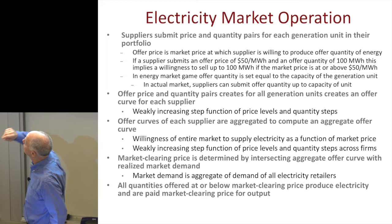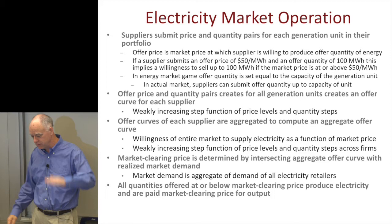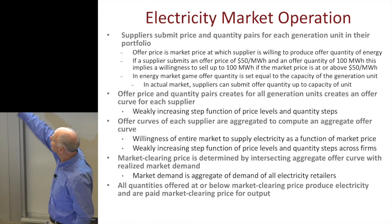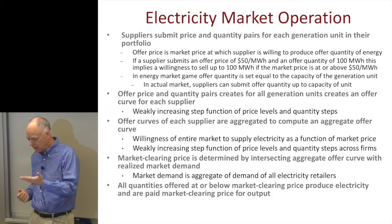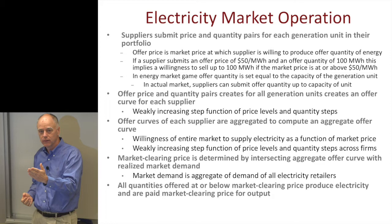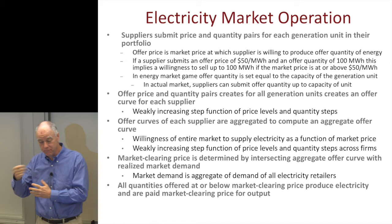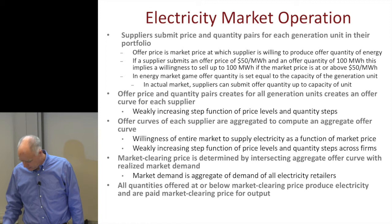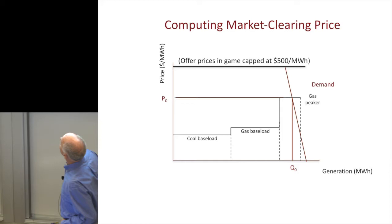Once you have the aggregate supply curve, the market clearing price is set where that supply curve crosses aggregate demand — just as you'd think of it from economics. If your offer price is at or below the market clearing price, you're dispatched. If it's above the market clearing price, you're not. That's the basic way prices are set, as shown in this example of what an offer curve looks like.